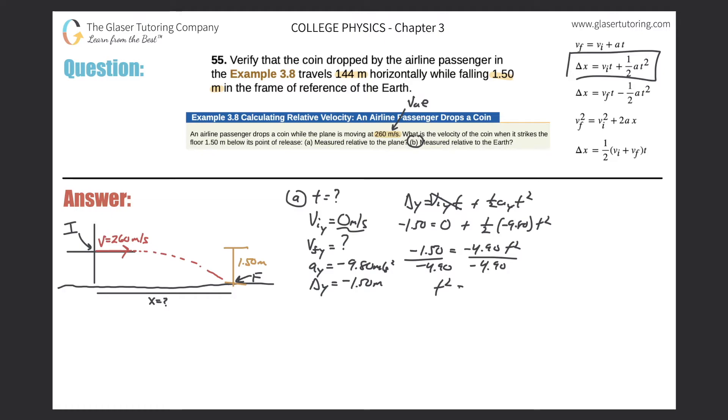And now we'll have t squared is equal to, let's see, 1.5 divided by 4.9. Remember it's going to be positive because you're dividing two negatives, so it's going to be 0.306.